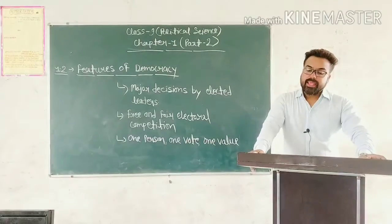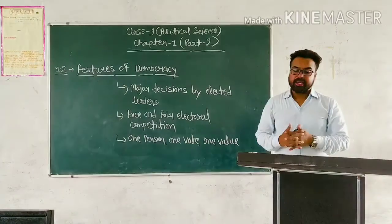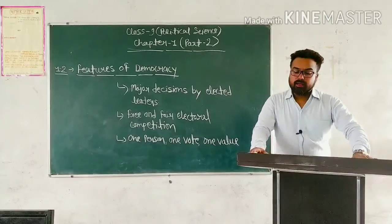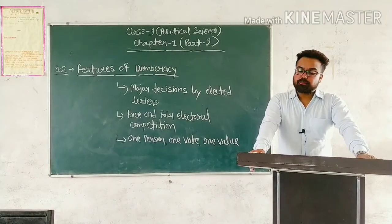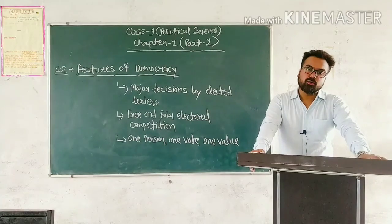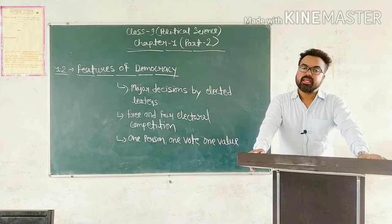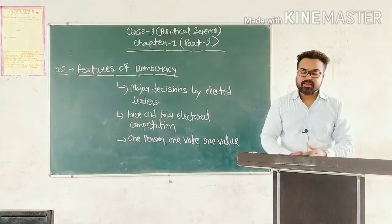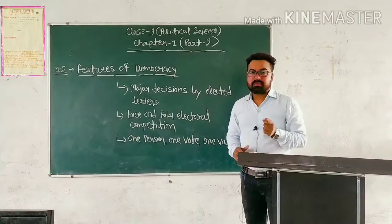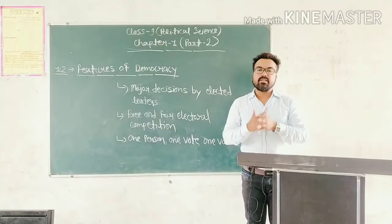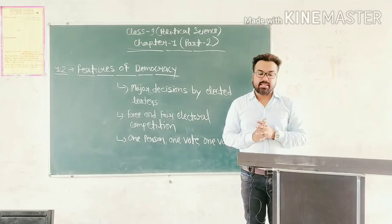پیج نمبر 5 پر پہنچ چکے ہیں۔ According to this legal framework order, the president can dismiss the national and provincial assemblies — صدر national assembly اور provincial assembly کو بھنگ کر سکتا ہے۔ انہوں نے آئین کو change کرکے یہ اختیار اپنے پاس لے لیا۔